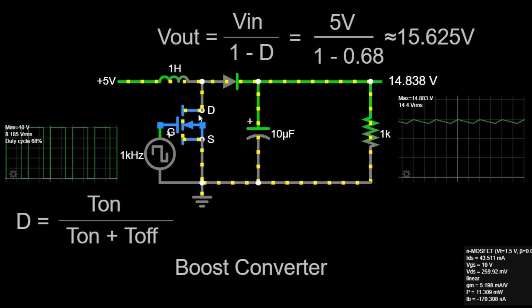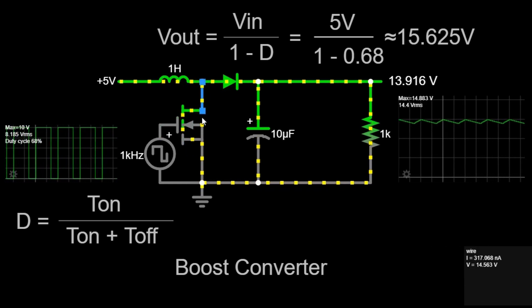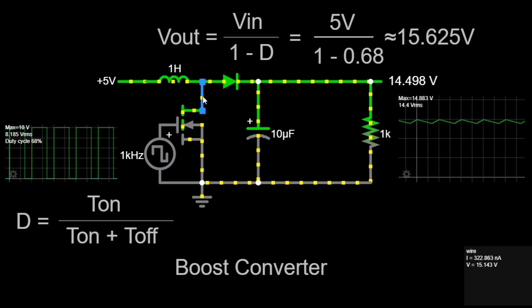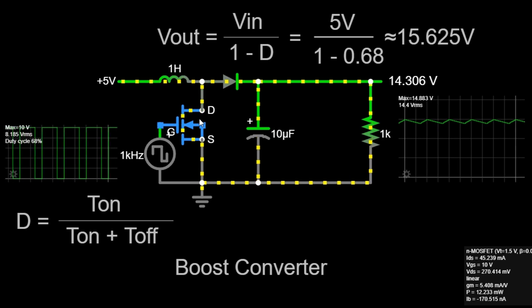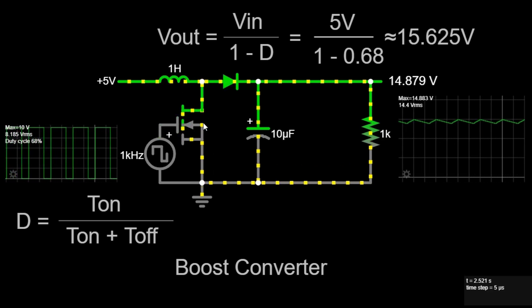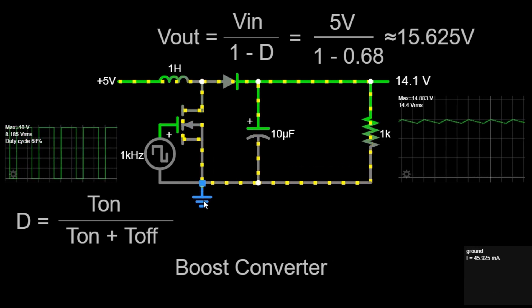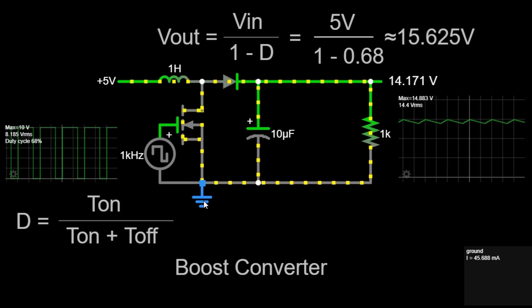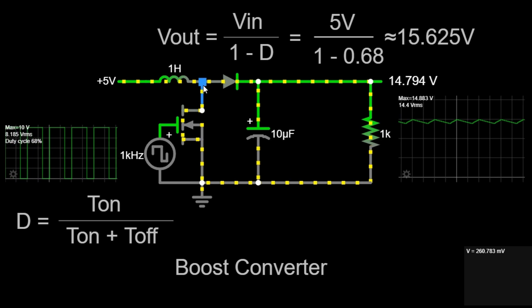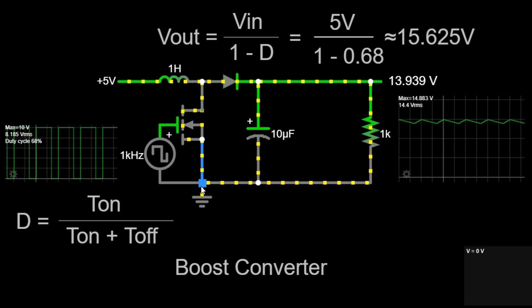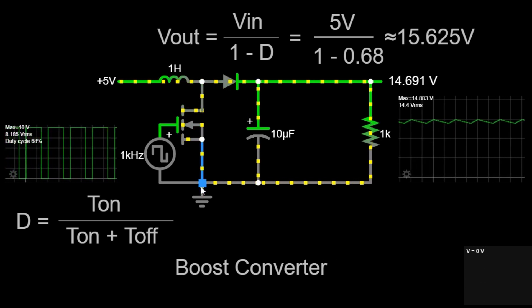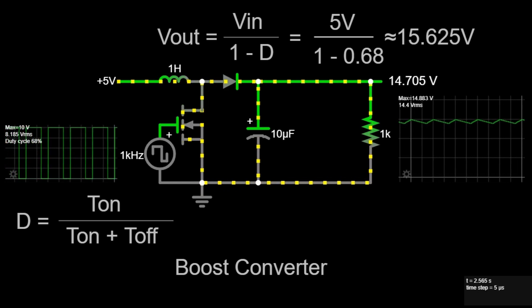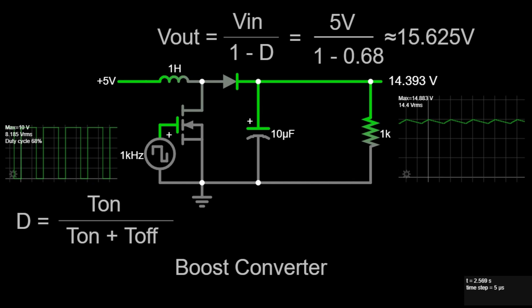Phase 1: switch closed, also known as the on state. When the switch, controlled by the square wave generator, is closed, the inductor is connected to ground. Current flows through the inductor, creating a magnetic field and storing energy. During this phase, the diode is reverse biased, blocking current from flowing to the output. In this state, the inductor is building up magnetic energy, and the voltage across the inductor increases gradually.